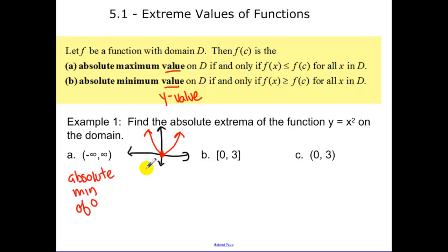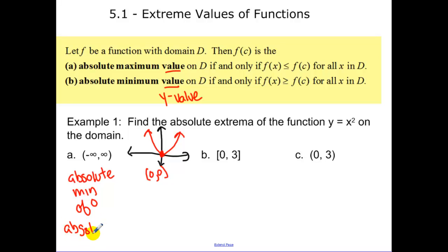Our minimum happens at the point (0, 0), but the absolute min is zero. It says absolute extrema — you need to tell me there is no absolute max. You're recognizing that you understand what those are, and that you need to state that there is none.